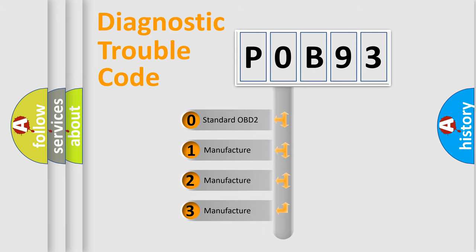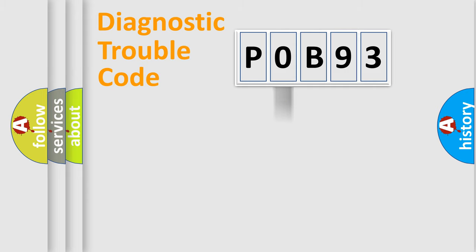If the second character is expressed as zero, it is a standardized error. In the case of numbers 1, 2, 3, it is a manufacturer-specific expression of the car error.